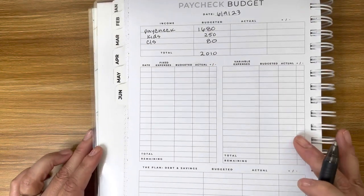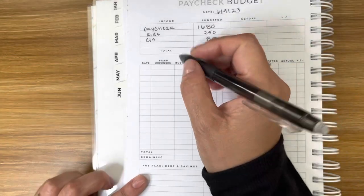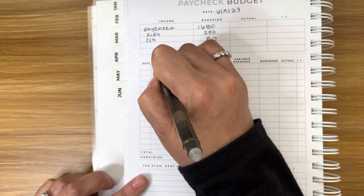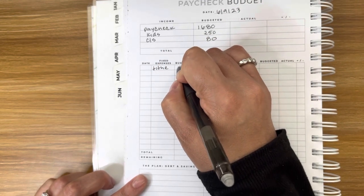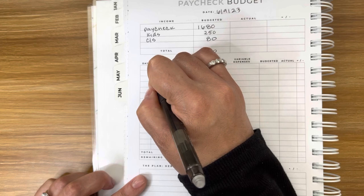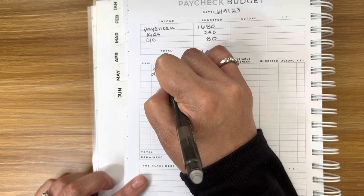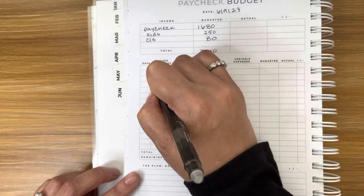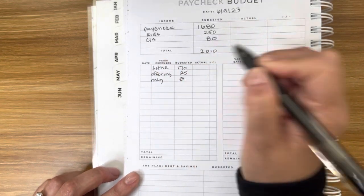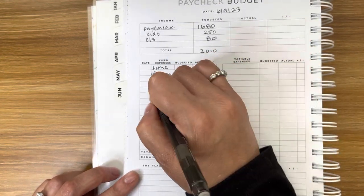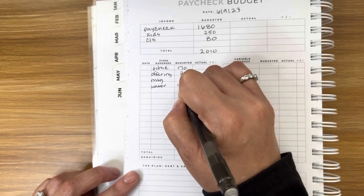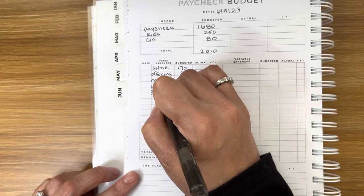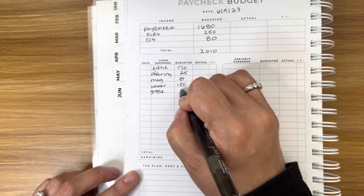Then we're going to go down here to fixed expenses, and the first thing we do is give. So we have our tithe. That budget amount is $170. Then we have an offering. That's going to be $25. Our mortgage is $0, but I still like to list it here. Water bill, we're going to send $150. And then the Google storage is $2.